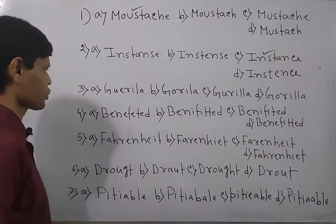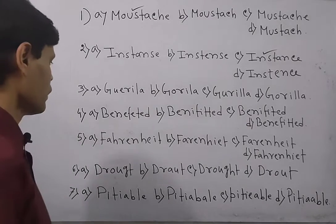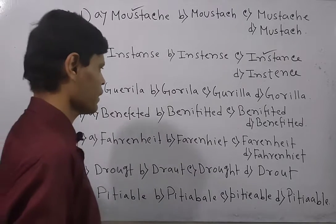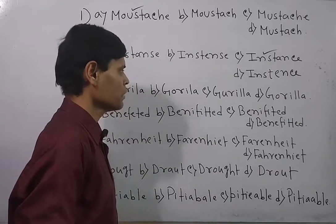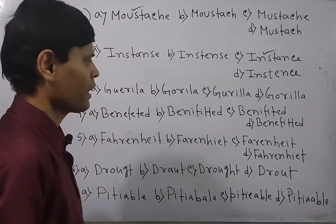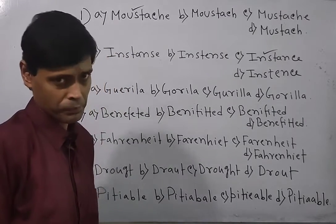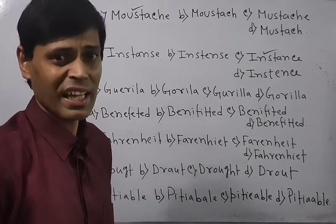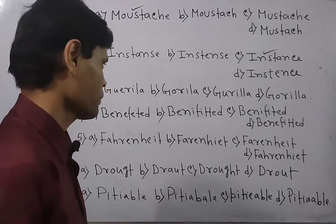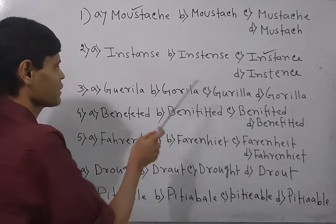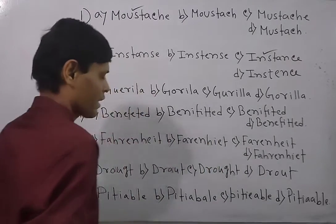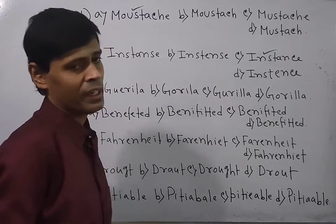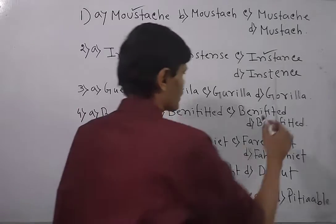Now look at the next question — the word is GORILLA. First spelling is G-E-V-R-I-L-A, second is G-U-R-I-L-A, third is G-U-R-I-L-L-A, fourth is G-U-R-I-L-L-A. The exact spelling of gorilla is G-O-R-I-L-L-A. The first three options are not the right answer, and option D is the correct spelling — this will be the answer.